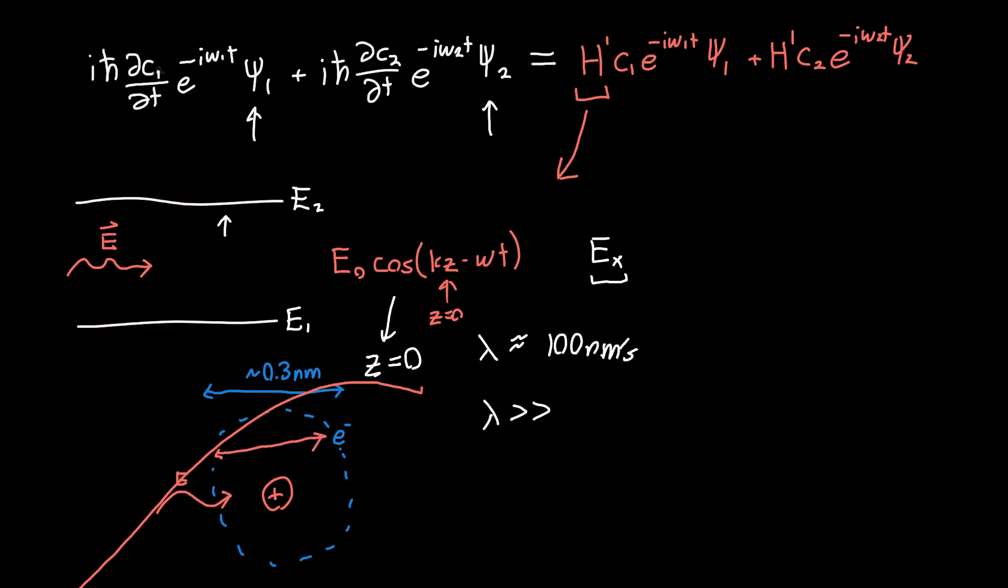And so this wavelength really should be much larger. So it might really look something like this as it goes through our atom. So it's going to change a little bit, but let's say not by much. So our traveling wave sort of looks like E0 times cosine of ωt. So this is our electric field.